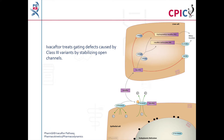Ivacaftor interacts with CFTR proteins at the plasma membrane of epithelial cells. It stabilises the open state of the CFTR channel and overcomes the gating defect caused by class 3 variants. The G551D allele is given here as an example of a CFTR class 3 variant.